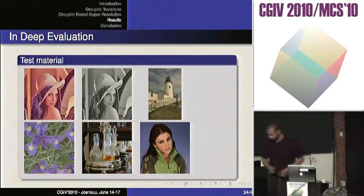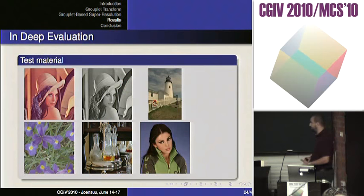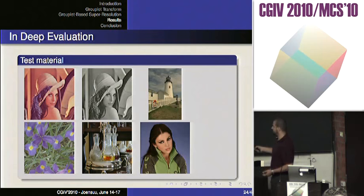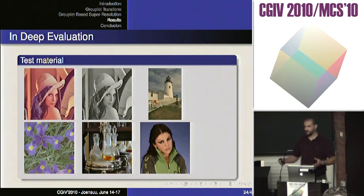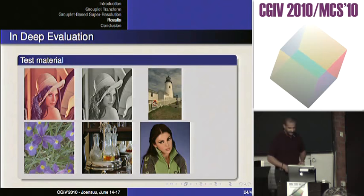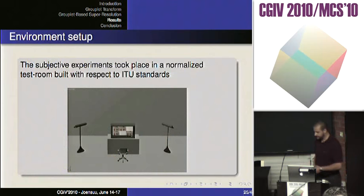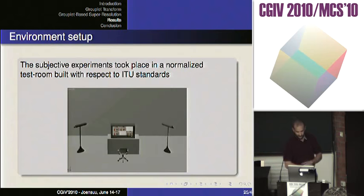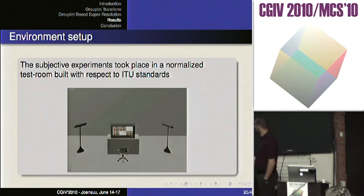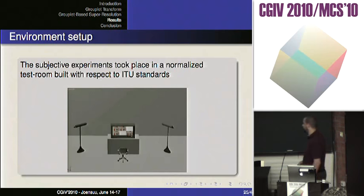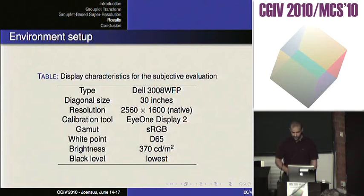Starting from that, we wanted to make a deep evaluation of the methodology with regard to existing methodologies and the state of the art. We used well-known images: Lena in color, Lena in grayscale, Lighthouse — because it has structural information that is very difficult to achieve — and other images. In our lab in Poitiers, we have a subjective testing room constructed using ITU standards, where we deal with work on quality assessment, human visual modeling, and so on. We used a Dell display with calibrated characteristics using the i1 device.